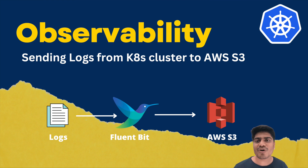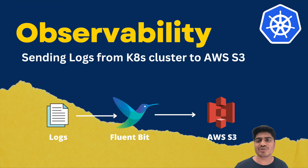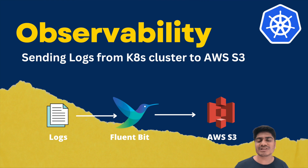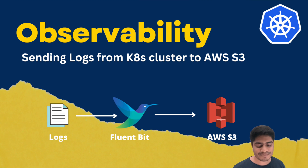This video is an extension of my previous distributed logging video, where I showed how you can use FluentBit to store the logs from your Kubernetes cluster to Elasticsearch. In this video, we are going to extend the same files and tutorials and additionally send the logs to an S3 bucket as well. So without any further ado, let's start the video and jump directly into the screen.